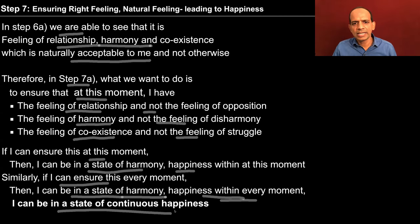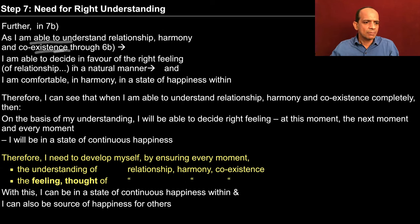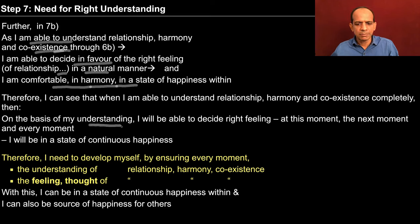By observing at this moment I can conclude that if I am able to do this every moment, then the happiness will continue. Further, in step 7b, as I am able to understand relationship, harmony and coexistence through 6b, I am able to decide in favor of the right feeling — that is relationship, harmony and coexistence — in a very natural manner without any imposition. And I am comfortable, I am in harmony, I am in a state of happiness within. When I am able to understand relationship, harmony and coexistence completely, only on the basis of my understanding will I be able to decide my right feeling every moment and thus be in a state of continuous happiness.